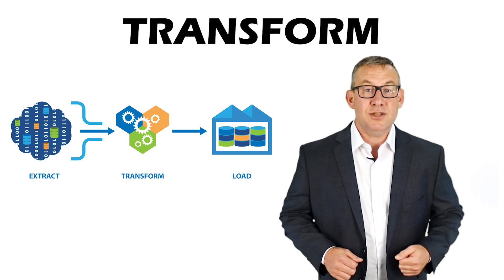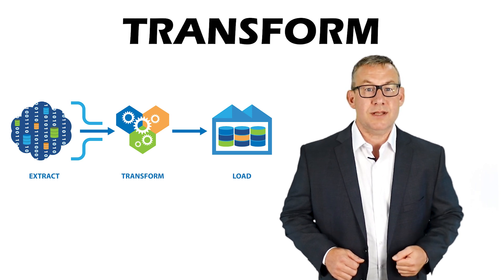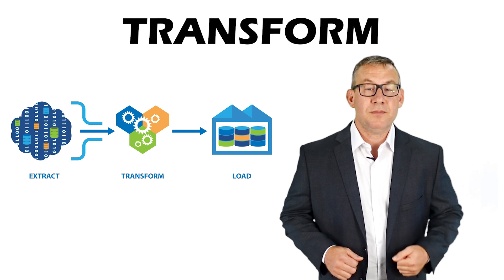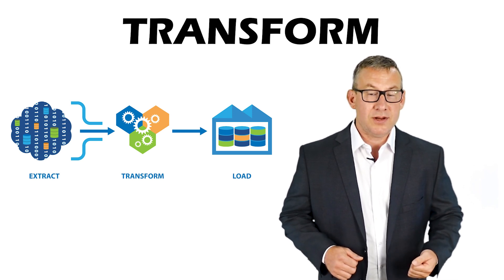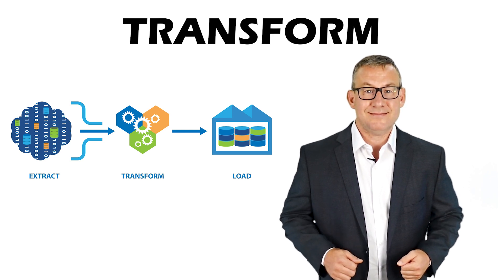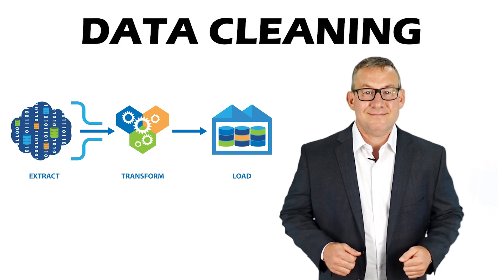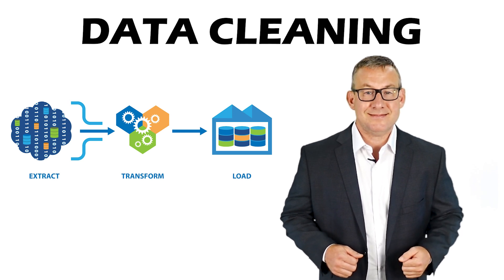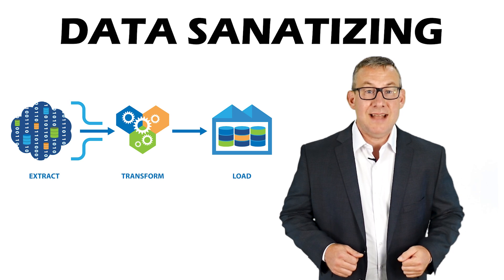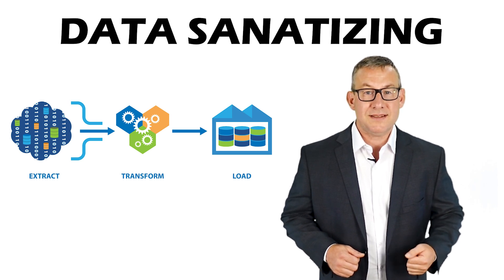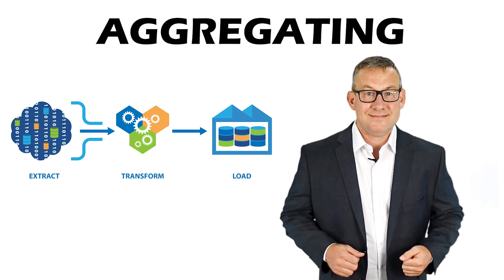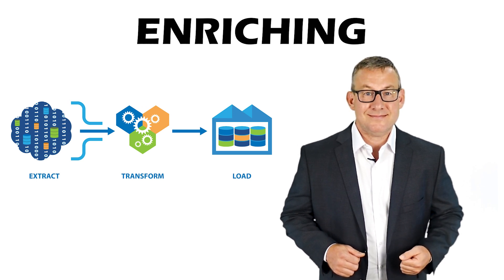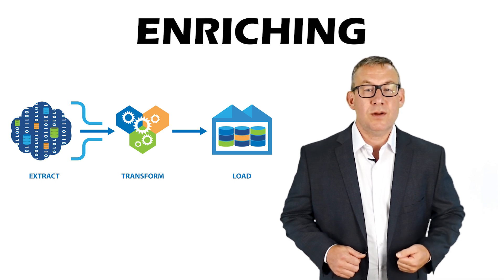In the Transform stage, raw data undergoes data processing in a staging area. The data processing can include cleaning, sanitizing, aggregating, and enriching data. Data cleaning removes inconsistencies, errors, and duplicates. Data sanitizing ensures data quality by standardizing formats. Data aggregating combines data from different sources. Data enriching adds additional information to the data.